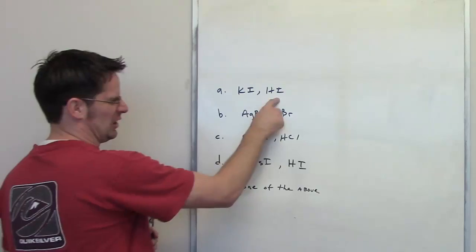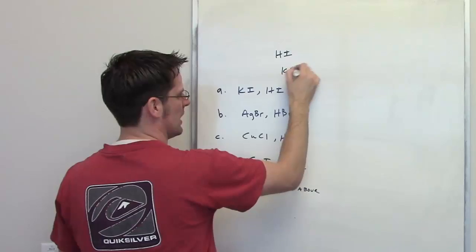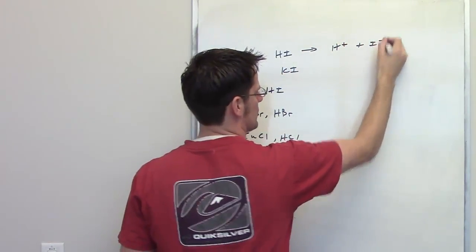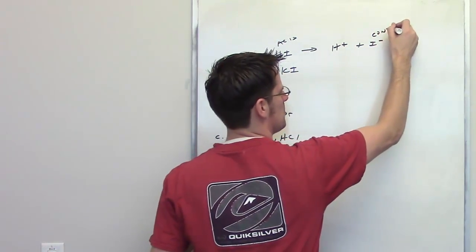For example, let's take a look at the first one. HI is an acid and KI is an electrolyte. HI dissociates to make H plus and I minus. HI is once again the acid and I minus is its conjugate base.